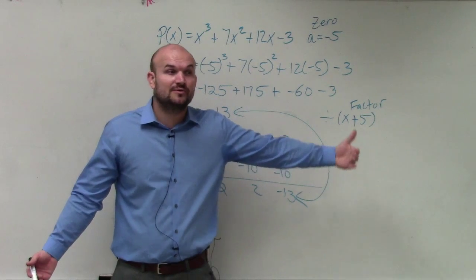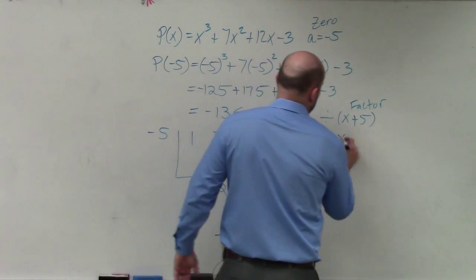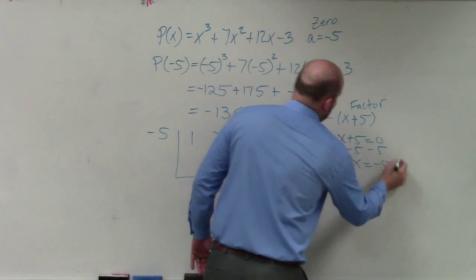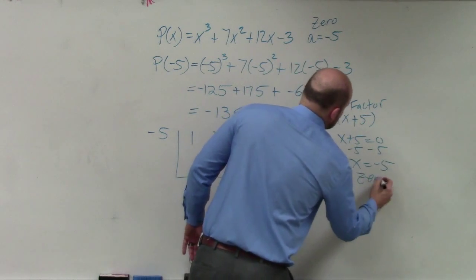You set your factors equal to zero. So I do x plus 5 equals 0, minus 5, minus 5, x equals negative 5. That is your zero.